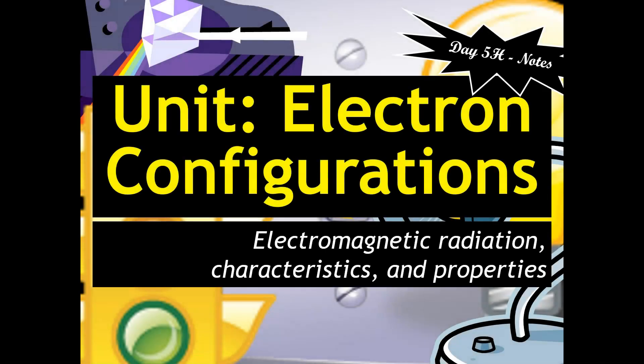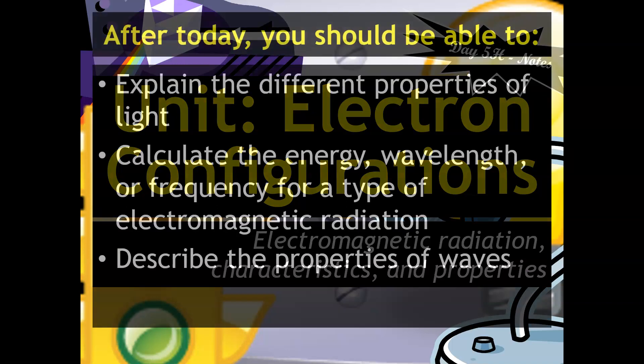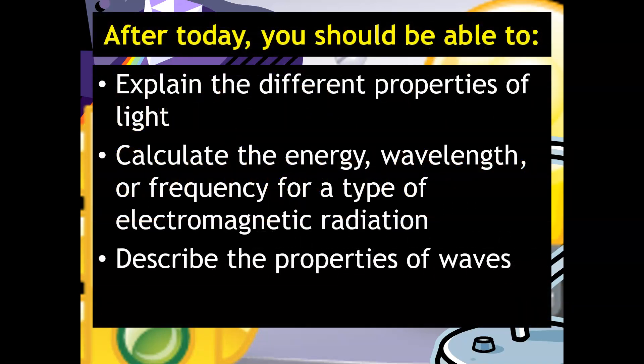Welcome back, chemists. In this video, we'll be talking about electron configurations, or the arrangement of electrons, and how it pertains to the type of radiation that we're observing. So we'll first be focusing on electromagnetic radiation, what it is, its characteristics, and its properties. After this video, you should be able to explain the properties of light, calculate the energy, wavelength, or frequency for a type of electromagnetic radiation, and describe the properties of waves.